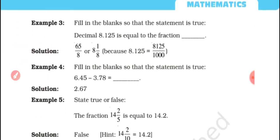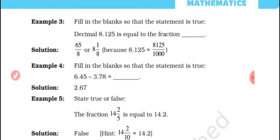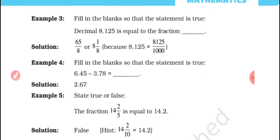Fill in the blanks so that the statement is true. The decimal 8.125 is equal to the fraction 65/8. We can convert the improper fraction into decimal. Since 8.125 has 3 digits after the decimal, we write it as 8125/1000. This decimal fraction is then written as a common fraction.